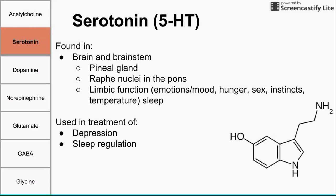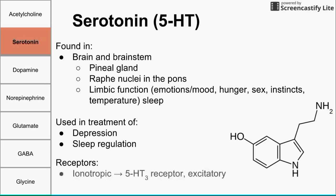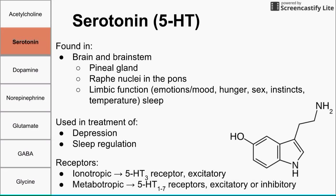One major class of antidepressants are SSRIs, which are involved with the reuptake of serotonin, and that's a treatment for depression. The receptors for serotonin are based on the 5-HT abbreviation. The ionotropic receptor is 5-HT3, which is excitatory. The metabotropic receptors are the other 5-HT receptors — 5-HT1, 2, 4, 5, 6, and 7 — which can be either excitatory or inhibitory.